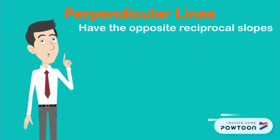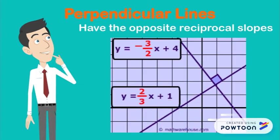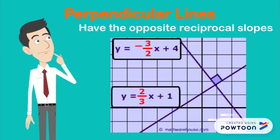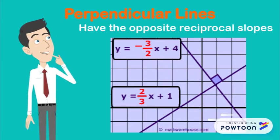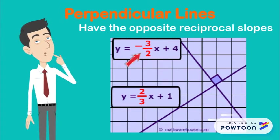Perpendicular lines. Remember, perpendicular lines will have opposite reciprocal slopes. In this example, we have a slope of negative 3 halves and a slope of 2 thirds.